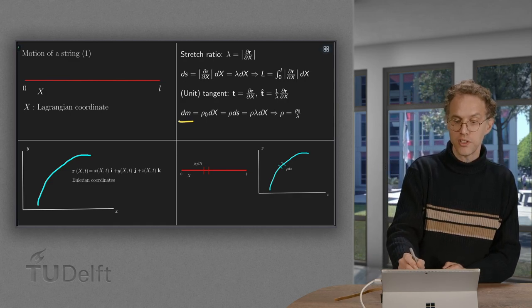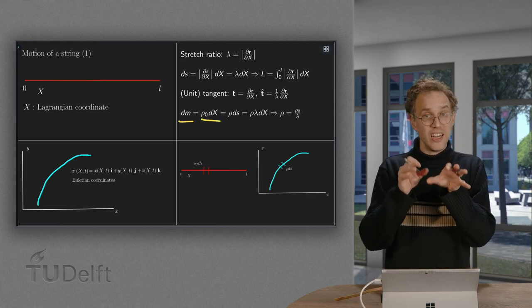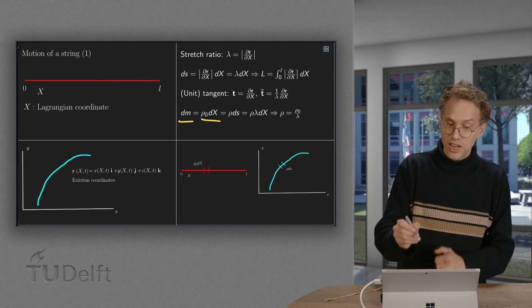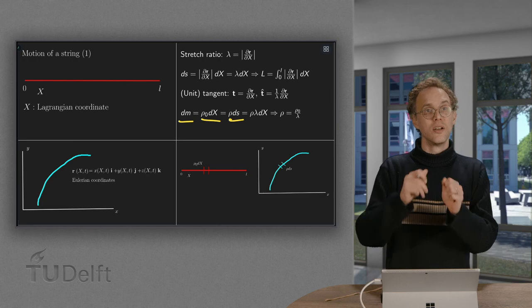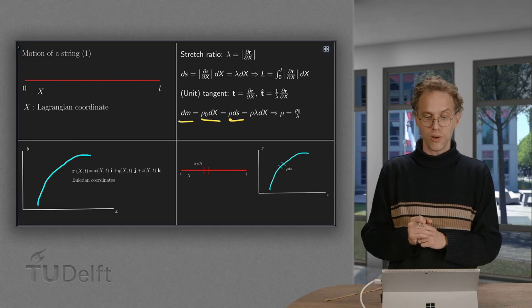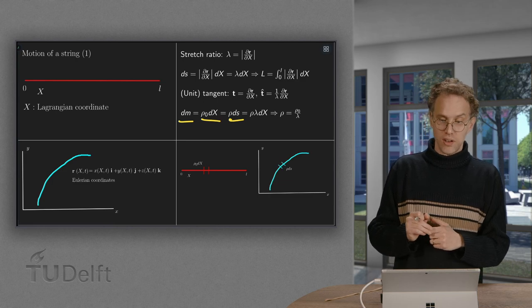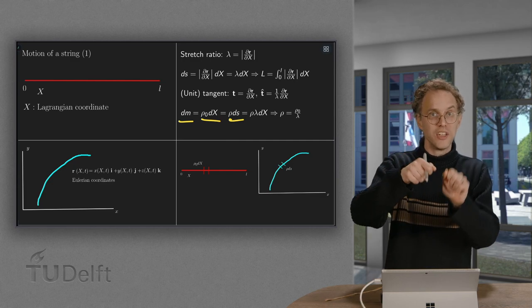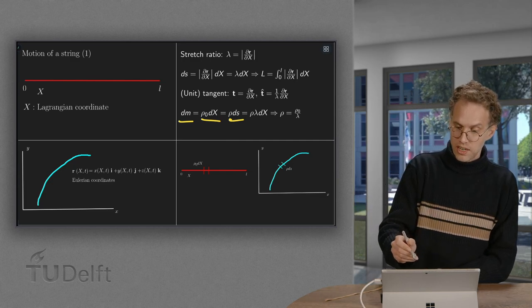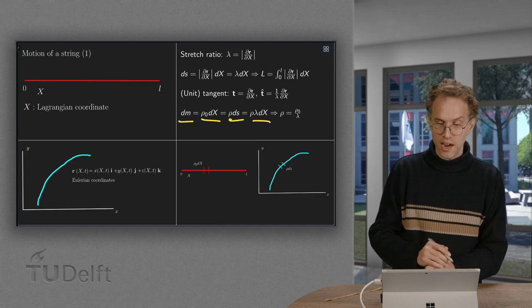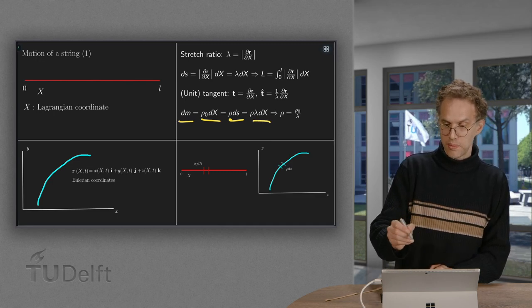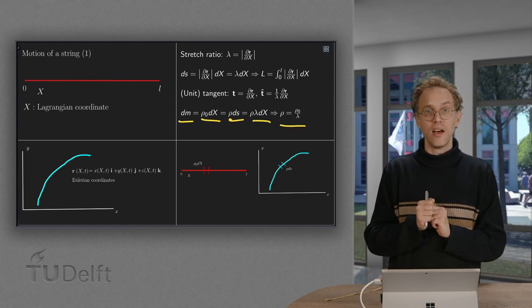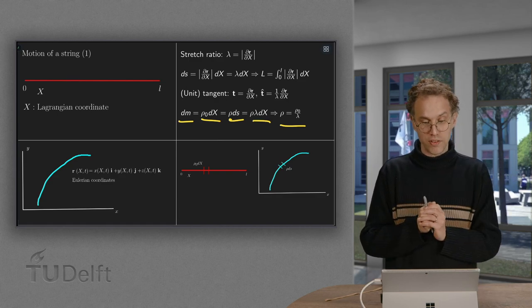So the dm, this amount of mass, it was rho_0 dx, where rho_0 is the density of the string when it is just lying there. It is the same as some unknown rho times ds, which is the amount of mass if you are stretching it all around. So you can also now find a relation between rho_0 and rho. Because ds was lambda times dx, you see rho_0 equals rho times lambda or rho equals rho_0 over lambda. So if you stretch it two times, then you are basically half the density.